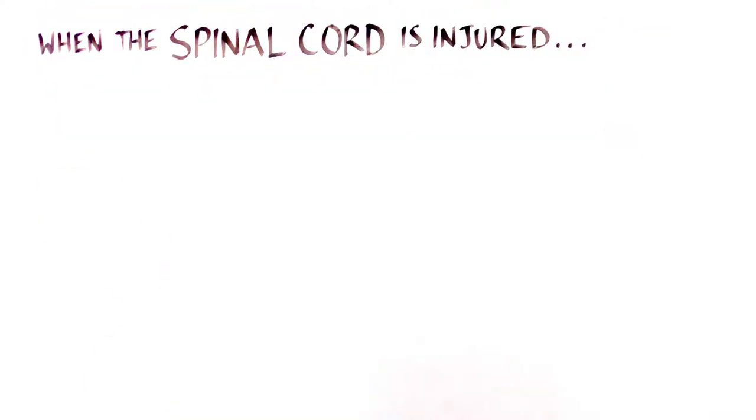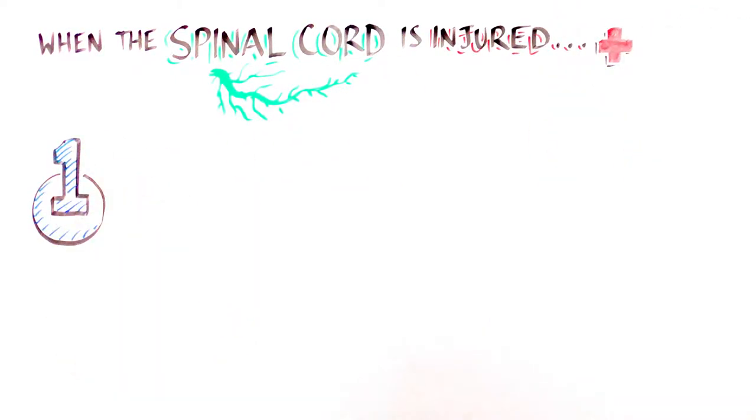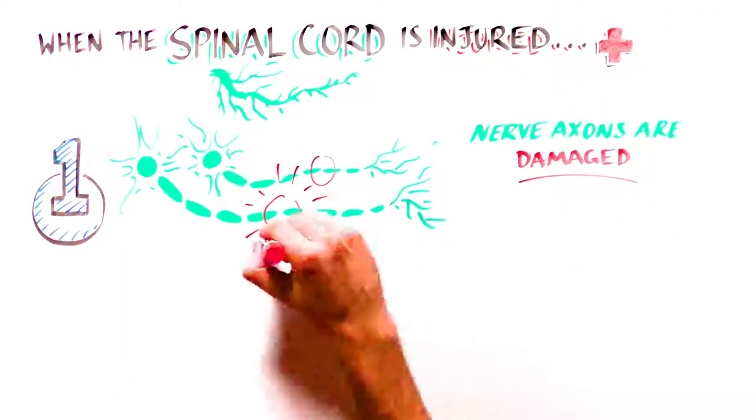When the spinal cord is injured, two things can happen. One, the nerve axons can get damaged, blocking the nerve signals.